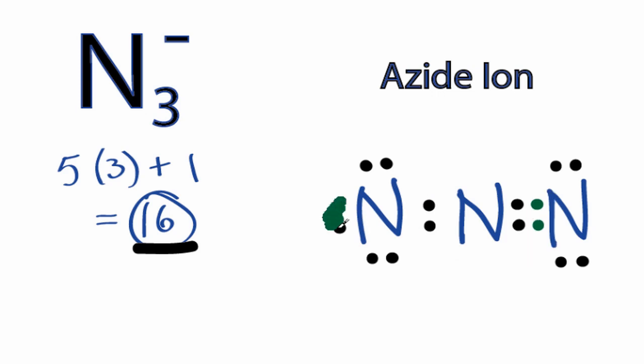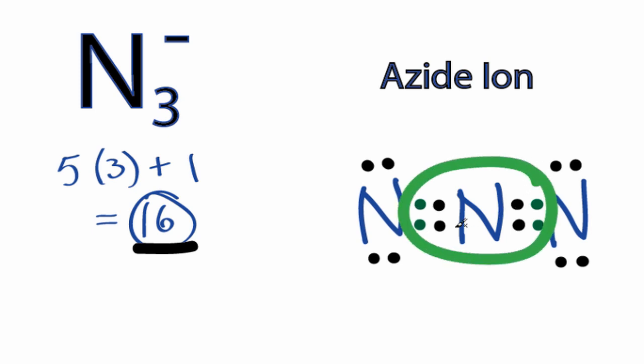If we move these electrons in the center and form a double bond, we'll find that the central nitrogen now has an octet, and we're still only using 16 valence electrons.